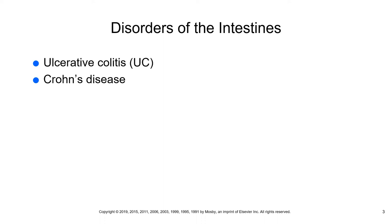Complications of ulcerative colitis include bleeding, rupture of the bowel, severe abdominal bloating, and a dangerous condition called toxic megacolon. With toxic megacolon, the bowel becomes very distended and thin — just like blowing up a balloon — and it can perforate at any time. This is extremely dangerous and something nurses must always remember.